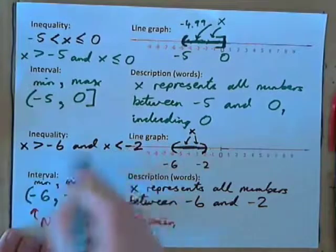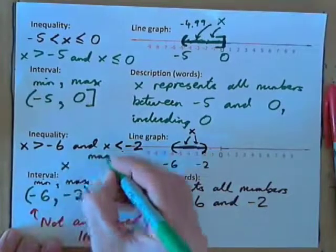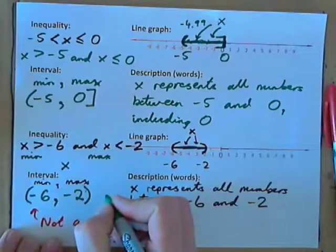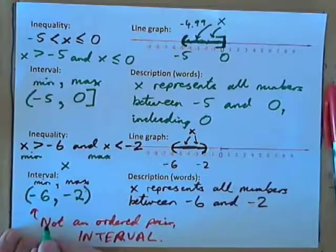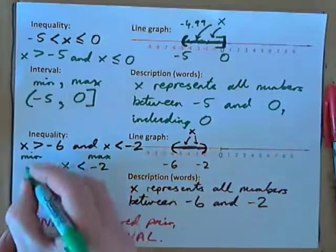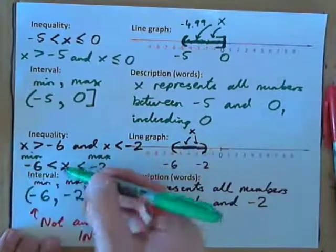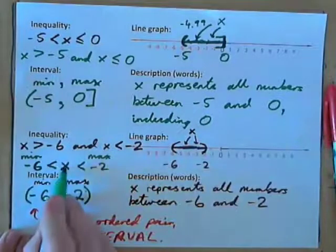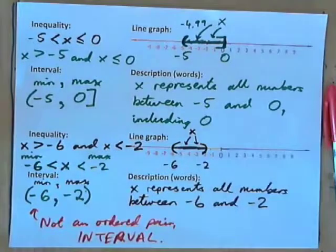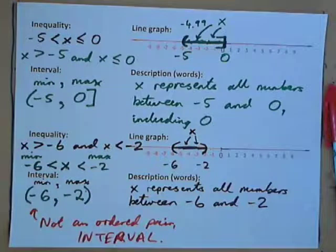Now, do you think you can change that into a compound inequality? You need to put x in the middle, the maximum over one side, the min over the other side — and turn it into a compound inequality. Which number is bigger? Negative 2. So, x is less than negative 2. Which number is lesser? Negative 6. So, x is greater than negative 6 — reading from here to here. x is greater than negative 6 and x is less than negative 2.